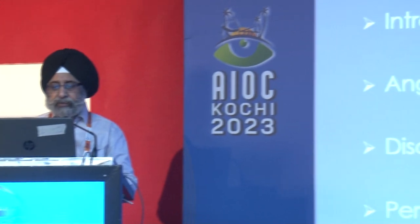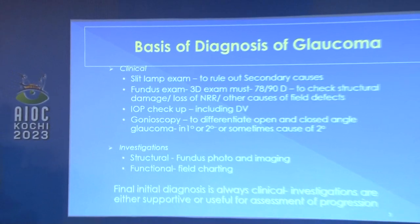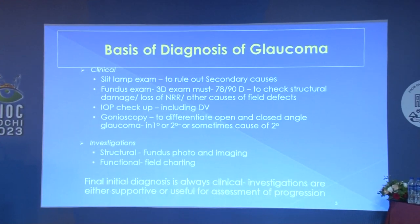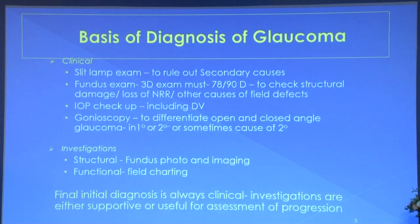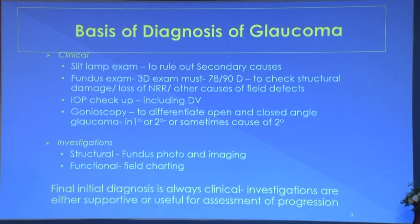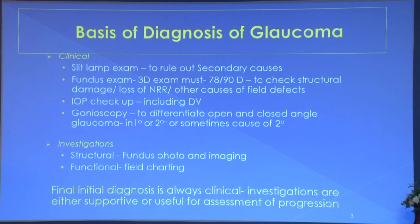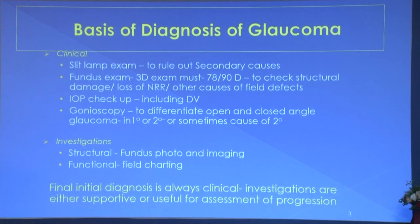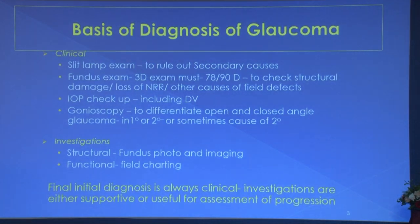We will cover intraocular pressure, angle evaluation, disc evaluation, and perimetry — OCT is covered in the next talk. The diagnosis of glaucoma is based on clinical slit lamp examination to rule out secondary glaucomas, fundus examination which must be 3D, intraocular pressure, and gonioscopy to differentiate angle closure from open angle and find causes of secondary glaucoma.